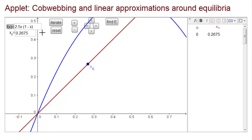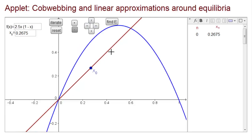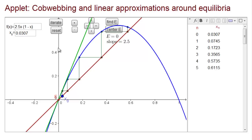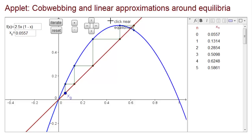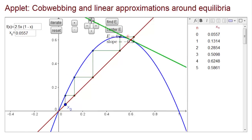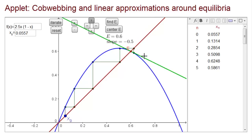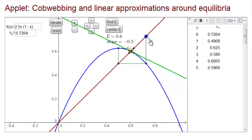Now we need to shrink the applet to find the equilibrium. Let's check the slope at 0 — it's 2.5, so it must be unstable since it's greater than 1. What's the slope at the larger equilibrium? This equilibrium is 0.6, and the slope is negative 1/2. Since this slope is between minus 1 and 1, it's stable. But notice how it oscillates around the equilibrium before spiraling in — we get that when we have a negative slope.